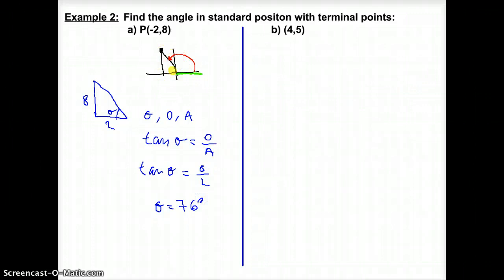Let me switch to calculator. So second tangent of 8 over 2, close bracket, enter. 75.9, so let's say 76. Go back. So theta is equal to 76 degrees. Now that's the yellow angle, right? That's the yellow angle, but I want to find out the red. So in order to find out the red, I need to say, well, that's 180, take away that yellow angle. So the angle that I'm looking for, let me call it alpha, it's 180 minus 76, which is equal to 104. And that's the angle that I was looking for. Okay? So that's 104. That's the angle in standard position that has the terminal point minus 2 and 8.